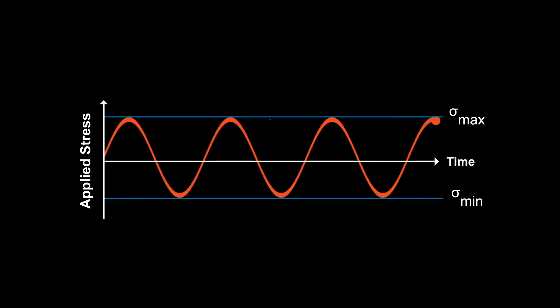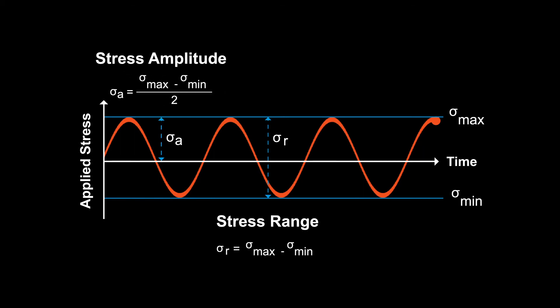Here we have a constant amplitude, fully reversed stress waveform being applied. As you can see, the same stress is being applied in tension and compression, and these are our minimum and maximum stresses. The stress range is defined as the difference between the maximum and minimum stresses, where the stress amplitude is defined as half of the stress range.